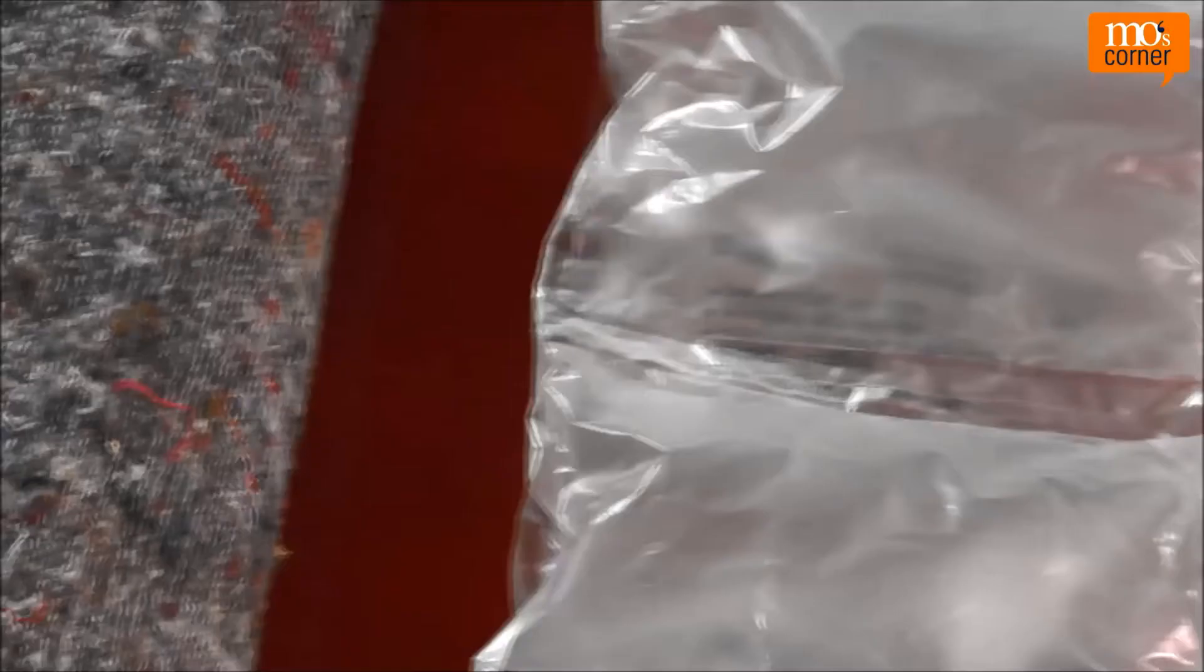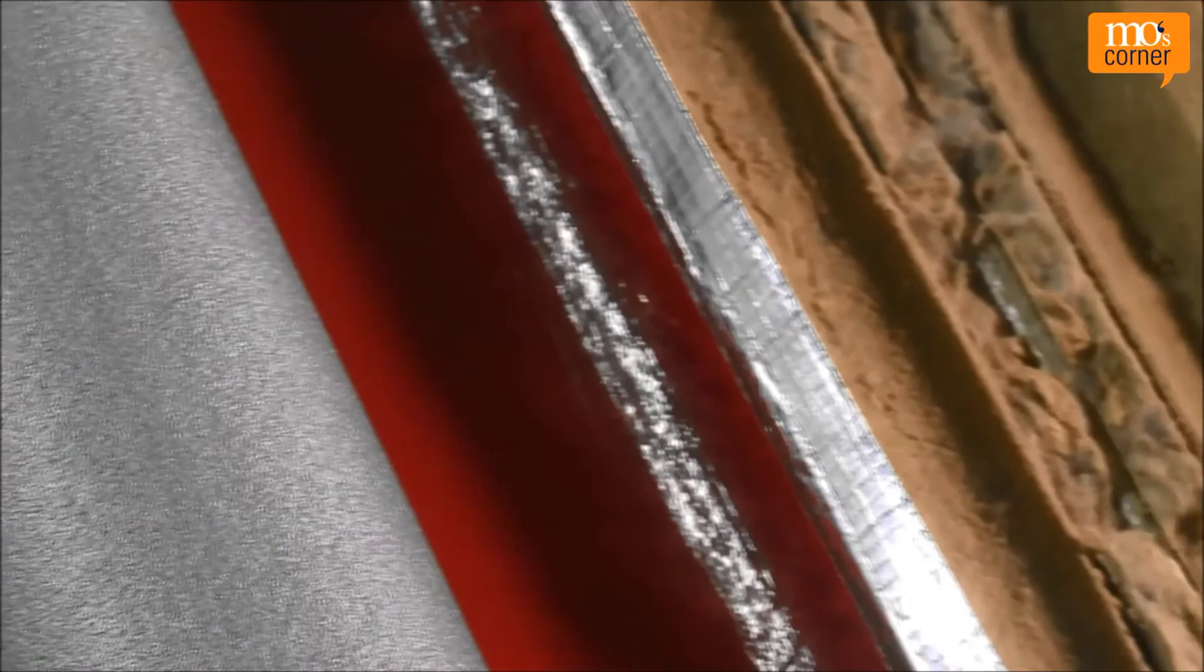As well as the blanket, we want to test air-filled packaging material, foam pipe insulation, and foil laminated rock wool pipe insulation. The air-filled packaging is relatively easy to fit. 77.4 decibels. An average insulation result.